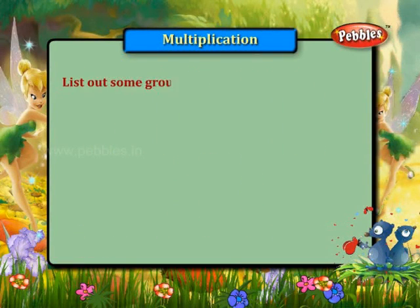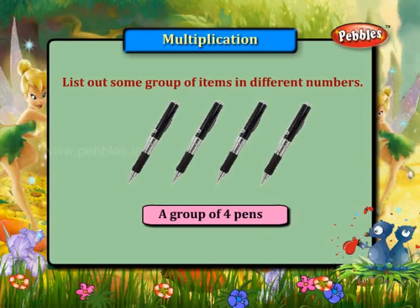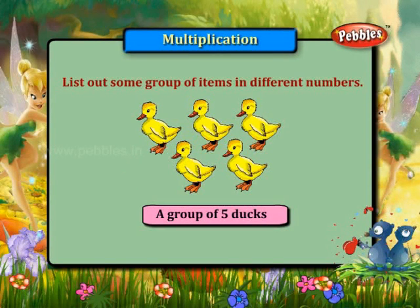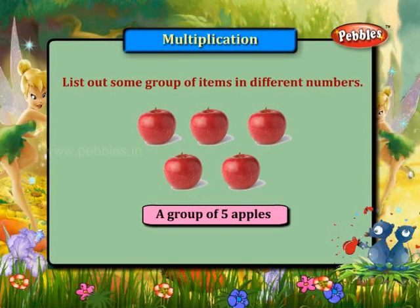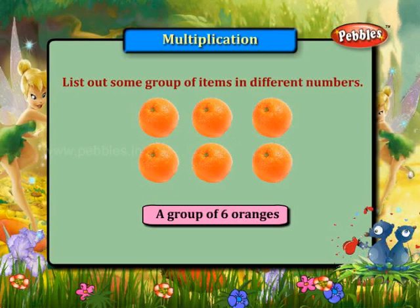List out some groups of items in different numbers. A group of four pens. A group of five ducks. A group of five apples. A group of six oranges.